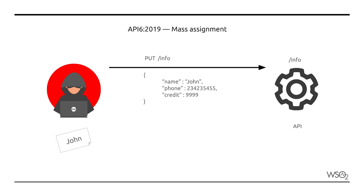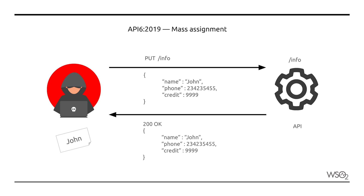John attempts to update his read-only credit balance by replicating the same request sent by the application and including the credit field with a value. The API blindly assigns the value provided in the request to its internal data structure without validating the value sent. This causes the internally managed credit balance to be updated to the value specified by John.